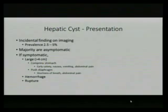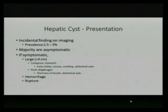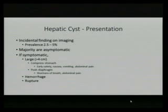Regarding presentation, the majority will be asymptomatic and show up as an incidental finding on imaging done for other reasons. Prevalence is between 2.5 to 5%. If symptomatic, symptoms are usually associated with large cysts greater than four centimeters. Presenting symptoms may include early satiety, nausea, vomiting, and abdominal pain — all secondary to compression of the stomach, especially if they're in the left lobe of the liver.